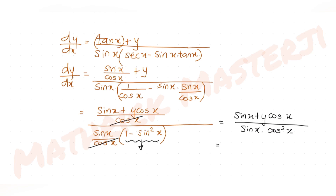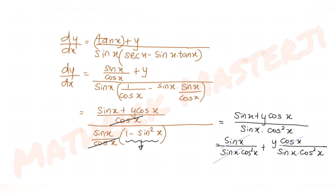Separating the numerator over the denominator: sin x / (sin x · cos²x) gives 1/cos²x = sec²x, and the y-term gives y cos x / (sin x · cos²x) = y / (sin x · cos x). So dy/dx = sec²x + y / (sin x · cos x).